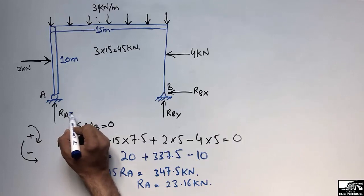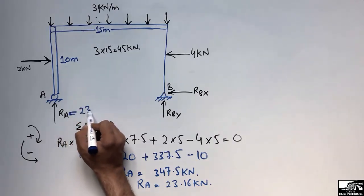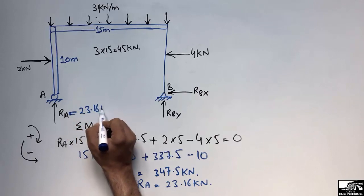Dividing 347.5 by 15, R_A comes out to be 23.16 kN. So the vertical reaction at A is R_A = 23.16 kN.